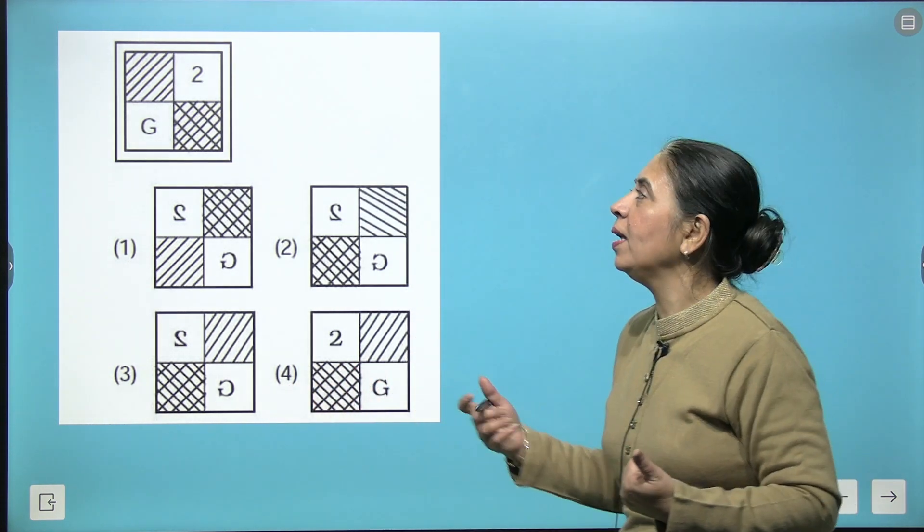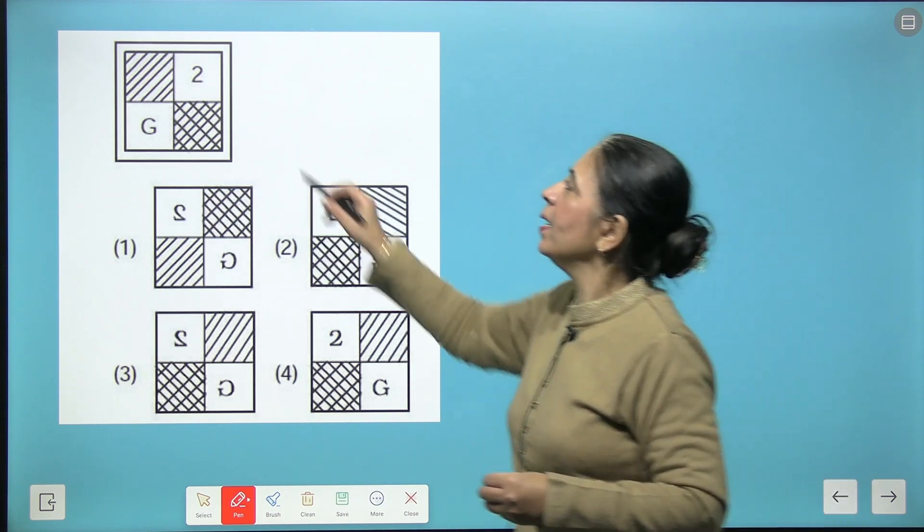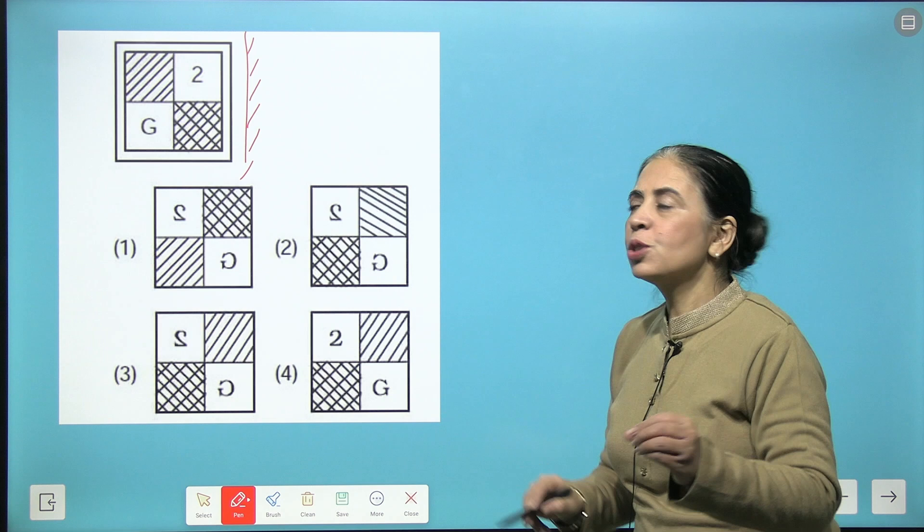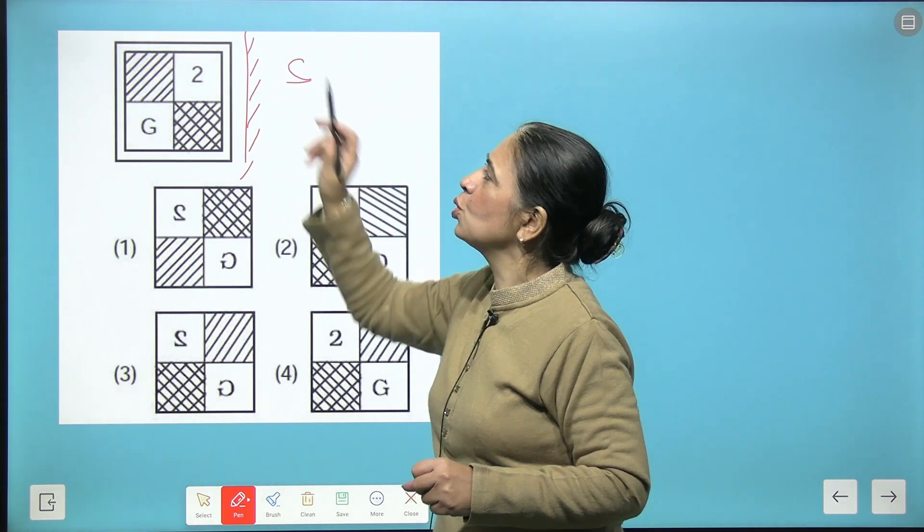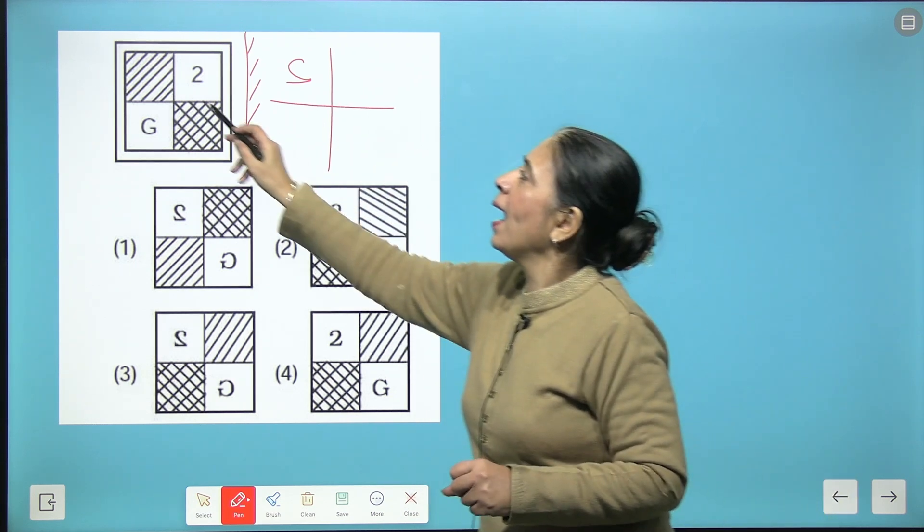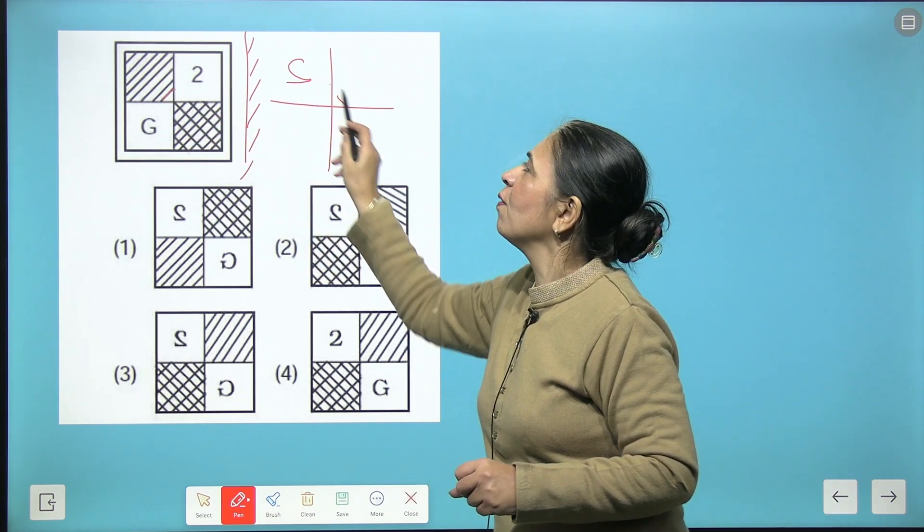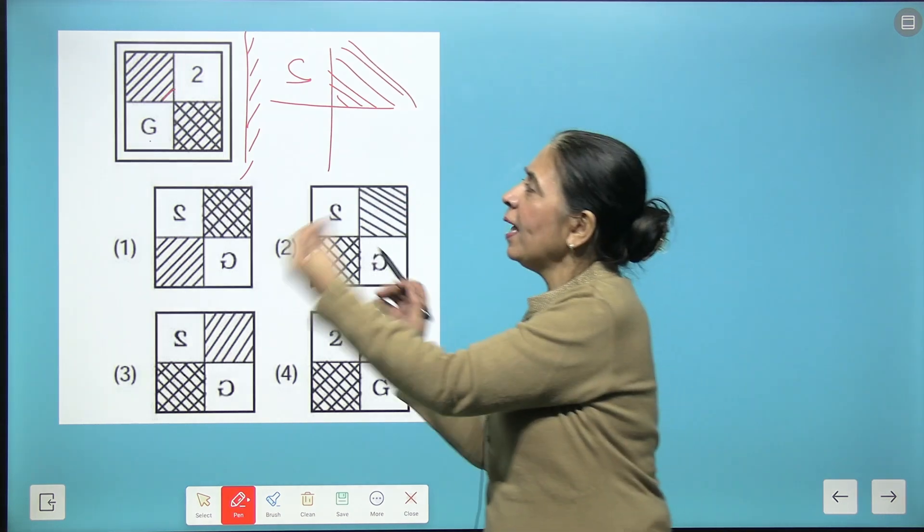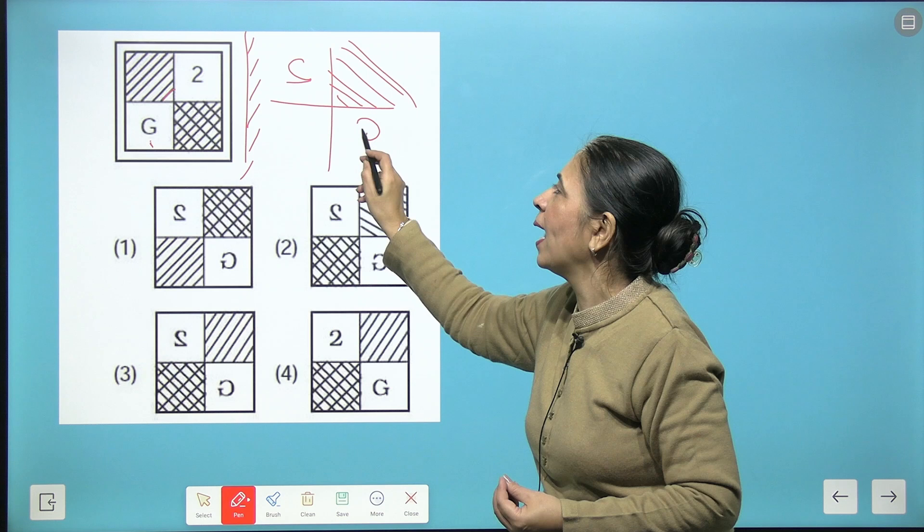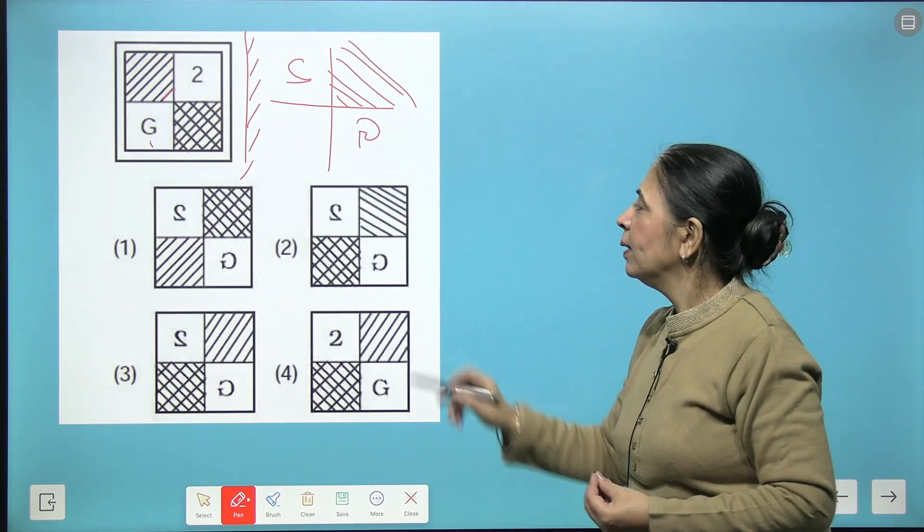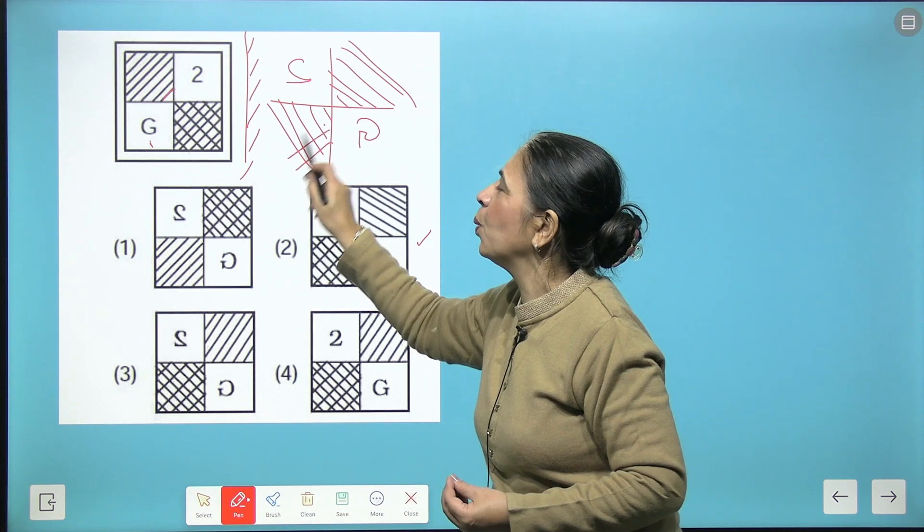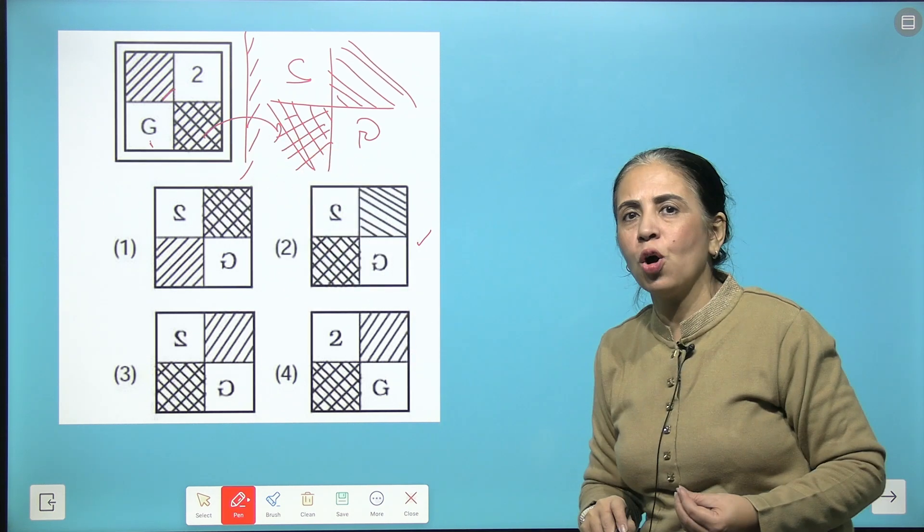Now we have an example here. You need to form the mirror image of this figure. So quickly, let's write this two in the reverse form, make quadrants over here, and this will be reflected in this form, right? Then we have G on the leftmost which will come on the rightmost side like this. So the correct answer will be the second one. Right, here we have the reflection of this cross, and second becomes your correct answer.